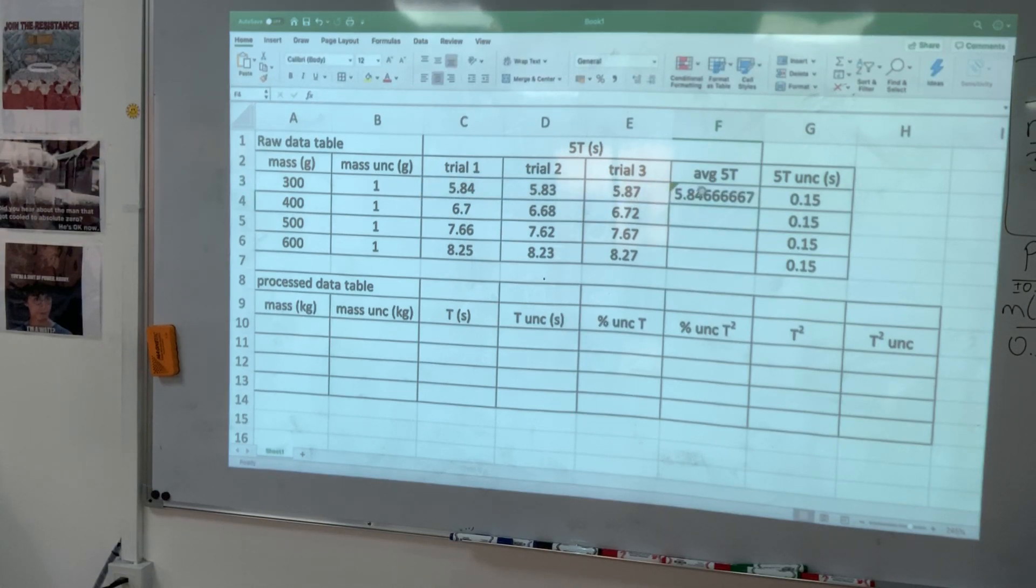Now I have the average of these three. This is what I see in the formula bar: equation sign, average, and selection. Now I don't want to write this in every time, every cell. I want the average to be calculated.